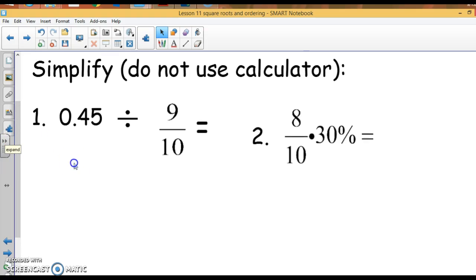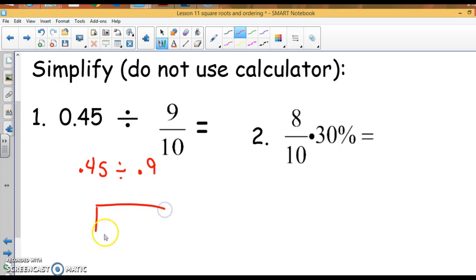So, I'm going to change them both to decimals. So, our first one, 0.45 divided by 9 tenths written as a decimal is 0.9. Now, divided decimals, the first number goes inside the box. The second number goes outside. Move it 1. Move the decimal place 1. Come straight up. 9 goes into 45 five times, it's 0.5.